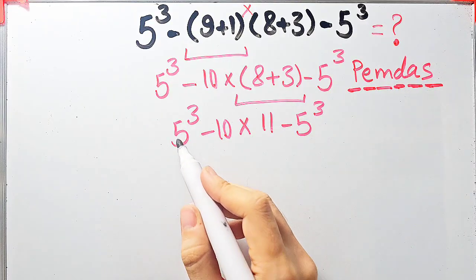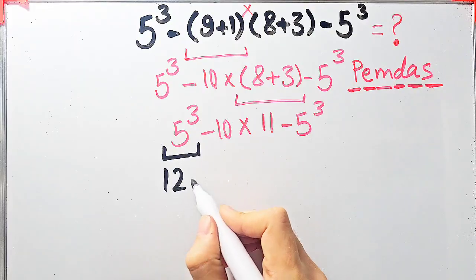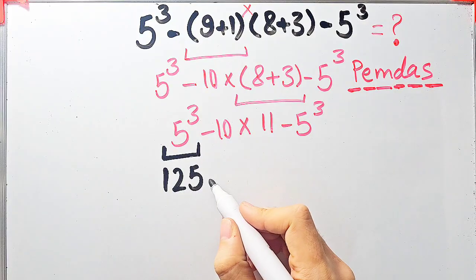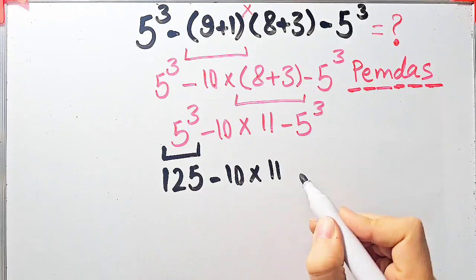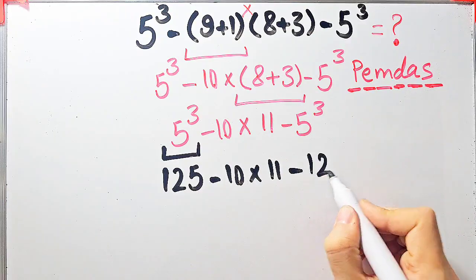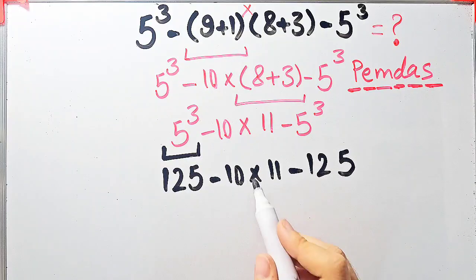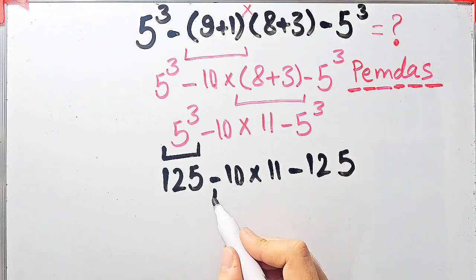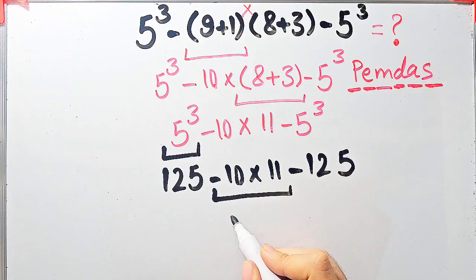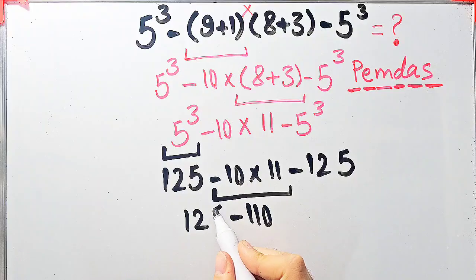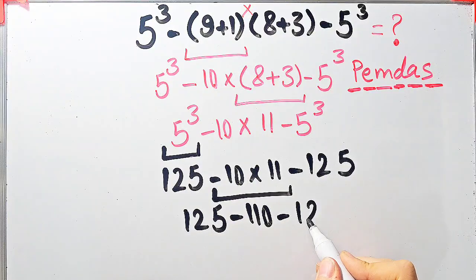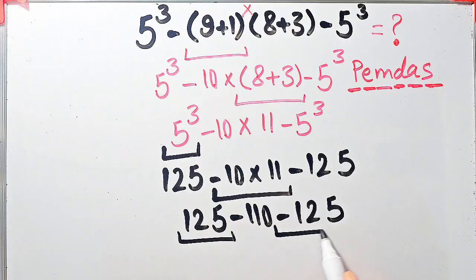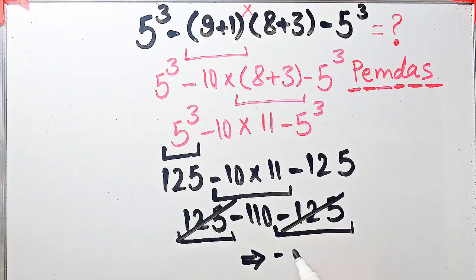Now we have 125 minus 10, times 11, then minus 125. We have subtraction and multiplication. Because multiplication has higher priority, we simplify: negative 10 times 11 equals negative 110. Now we have 125 minus 110, then minus 125. Because we have negative and positive numbers on both sides, we simplify and get the final answer: negative 110.